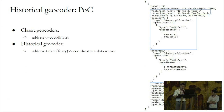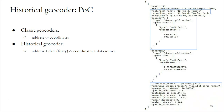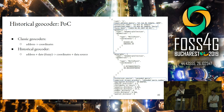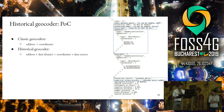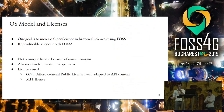Classic geocoders take an address and return coordinates. In our case, we want to take an address plus a date — and sometimes it is a fuzzy date, more of a period than an absolute date. So a historical geocoder will take an address plus a date, and the response will give coordinates and the data source. That's really important for us.